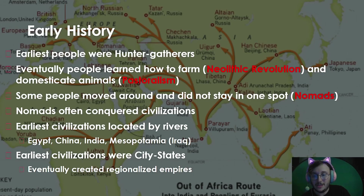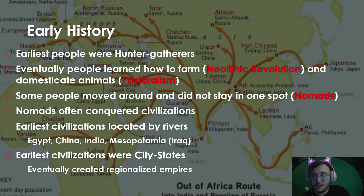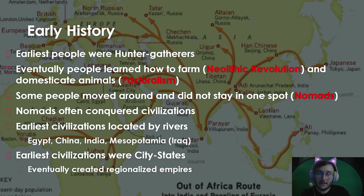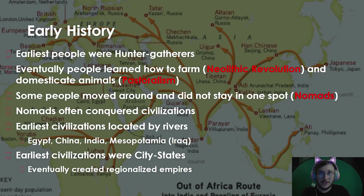The earliest civilizations were located by rivers — known as river valley civilizations. The earliest ones are Egypt with the Nile, China with the Yangtze or Yellow River, India with the Ganges, and Mesopotamia in modern-day Iraq with the Tigris and Euphrates. These early civilizations were city-states — like if Arlington were its own country, a city that has a government and controls the surrounding areas, more accurately called a regionalized empire.